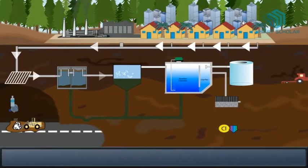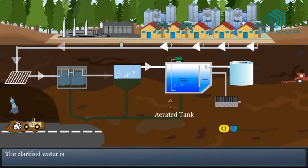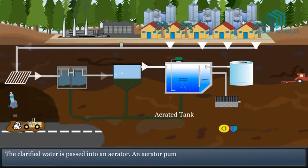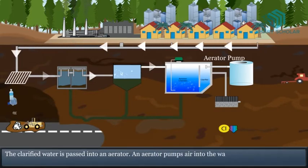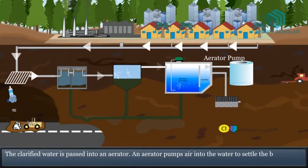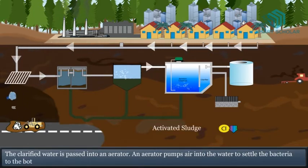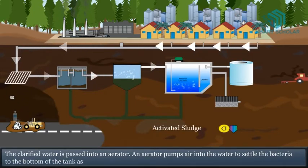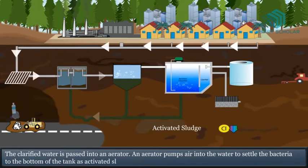Step 4: Aerator. The clarified water is passed into an aerator. An aerator pumps air into the water to settle the bacteria to the bottom of the tank as activated sludge.